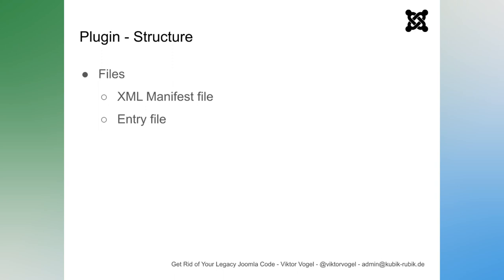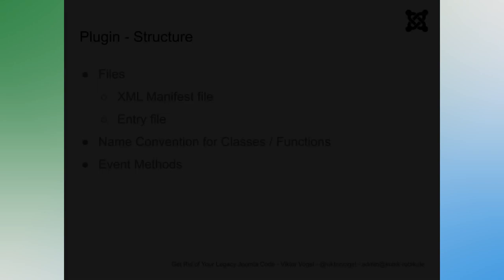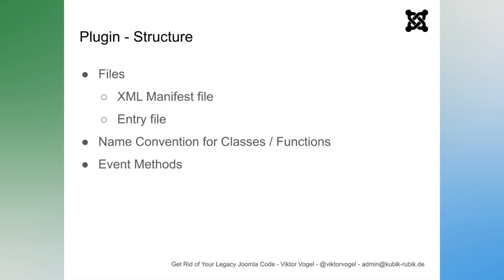Let's take a look at the structure of a plugin. You actually just need two files to have a fully functional plugin — that's quite cool. The first is the manifest file in XML format, and the second is the entry PHP file which contains the actual code. They follow a predefined naming convention, which is required so Joomla can find the class and trigger the event functions properly.